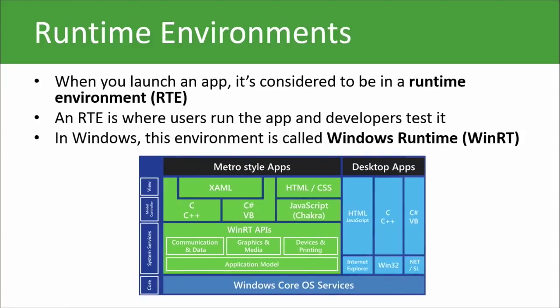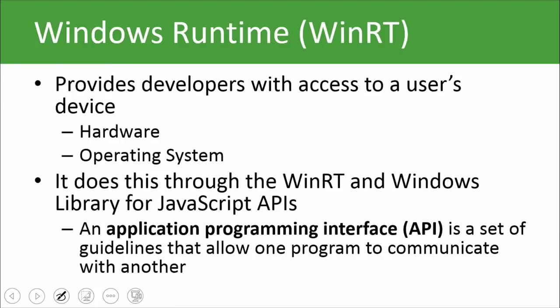Looking at this visual: we're going to use HTML, CSS, and JavaScript, and you're going to use JavaScript to access the WinRT APIs, which will let you access communication and data services, graphics and media, and then devices — cameras and printing services, things of that nature. An API is an application programming interface — essentially a set of guidelines that allow a program to communicate with another. Fortunately, some great folks have already built a lot of code that you can reuse to perform the functions you want in your application.